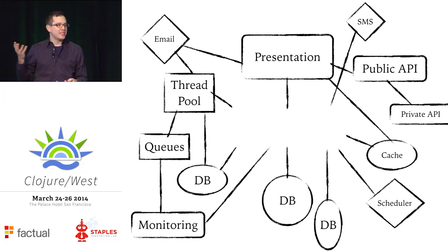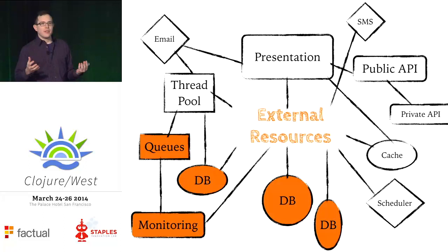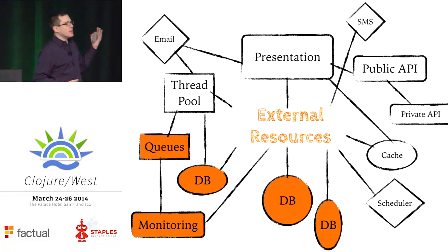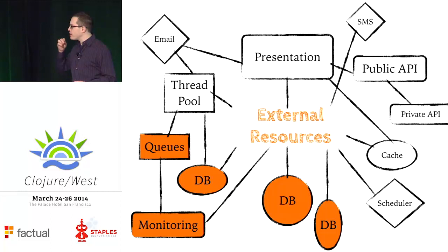A lot of these pieces of functionality in our app have state in them. Some of it's easy — it's just static configuration. But we have to keep track of things like database connection URLs, API keys, usernames, passwords, all that stuff. Then we have a lot of external resources that we need. Anytime you have a client API for some service that has a connection object or a session object, or even something simple like a socket connection or a file handle — these are all stateful resources our applications need to use and keep track of.